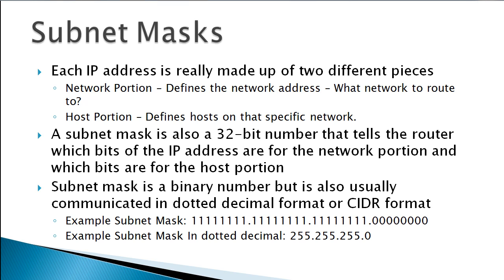Now, what you really have to understand about IP addressing is that each IP address is actually made up of two different things. Part of those 32 bits defines the network address — in other words, what network we're routing the packets to. Another portion defines the host portion of the IP address. A subnet mask is the way for the router to understand which part of the 32 bits is for the host and which part is for the network.